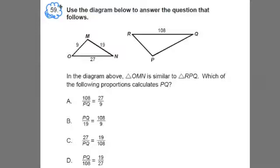Alright, so let's look at number 59. It says, use the diagram below to answer the question that follows. They give you a diagram of two triangles. And it says, in the diagram above, triangle OMN is similar to triangle RPQ. Which of the following proportions calculates PQ?